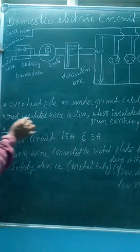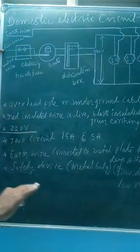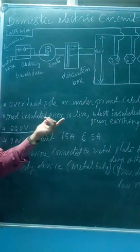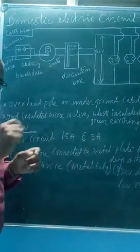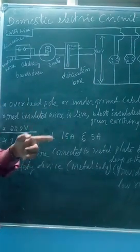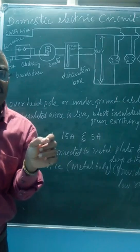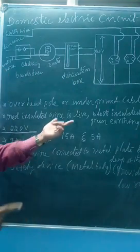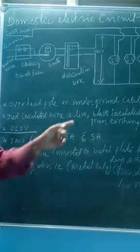What is live wire? The red insulated wire is called the live wire. This wire has red insulation and it carries current. Usually, red color insulation is called the live wire. The live wire always has electricity — it has a direct connection to the generating station. Therefore, the switch is always connected to the live wire.